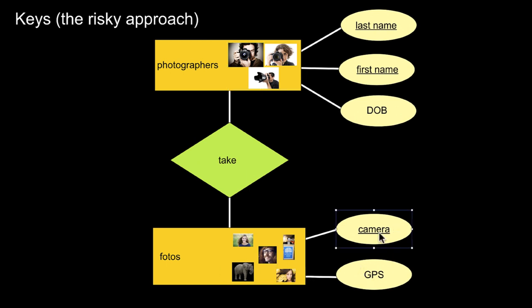For photos, using camera as the key is a really bad approach. Think about what that means: if you use a Sony Alpha 6000 twice to take two different pictures, both would have the same attribute value. Since camera is the key, specifying that camera would return two photos, which violates the idea of a key. So it's very important to pick the right keys.